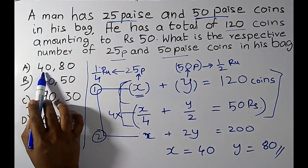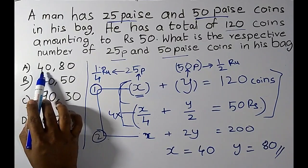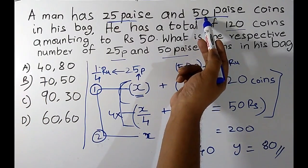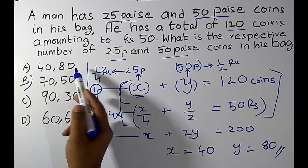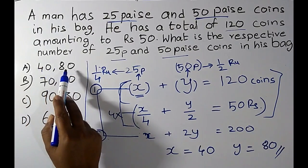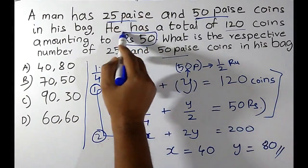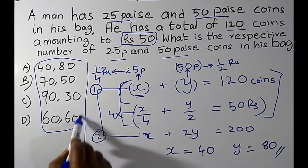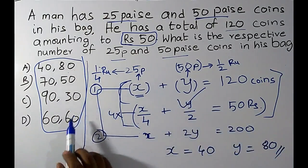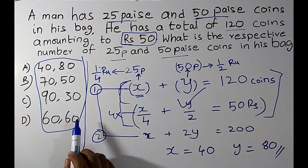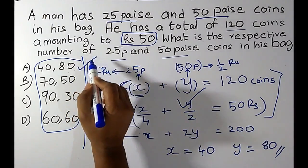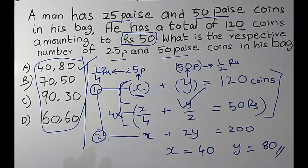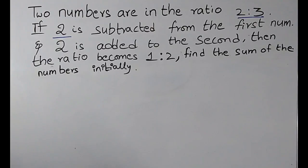You can also follow the substitution method from the options. If you substitute: 40 coins of 25 paise = 10 rupees, and 80 coins of 50 paise = 40 rupees. 10 + 40 = 50 rupees. There are two methods: if options are not available use the equation method; if options are available, I recommend substitution, which gives the answer within half a minute.